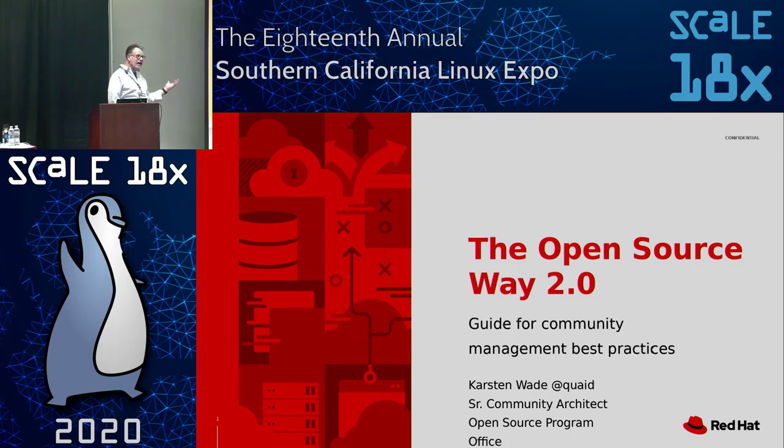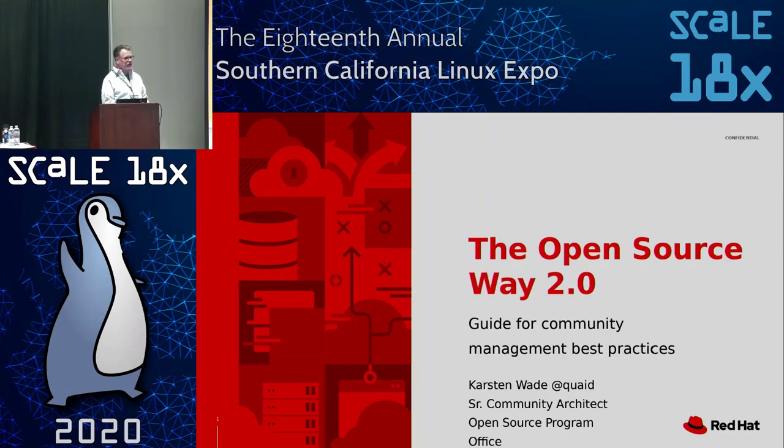Hi, I'm here today to talk about the Open Source Way, which is a guide for community management best practices. My name is Karsten, and I'm a community architect on Red Hat's Open Source Program Office. If you want to know more about that, come talk to me later. I'll also be in the expo hall all day tomorrow as long as it's open.